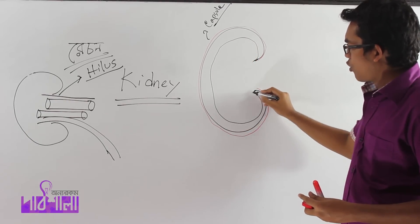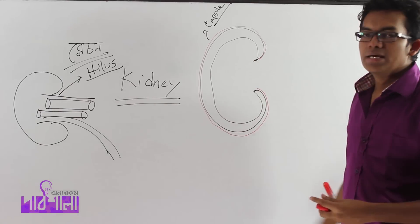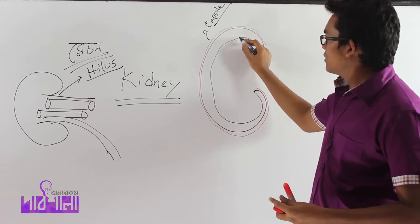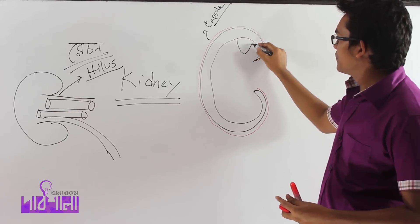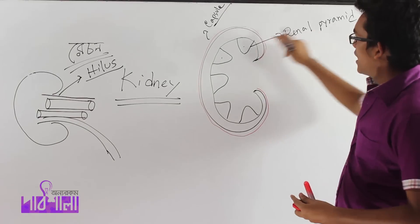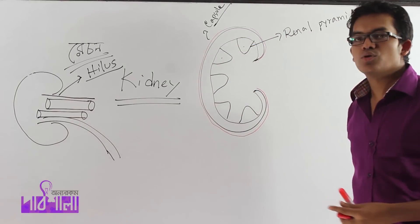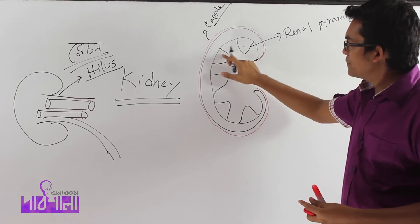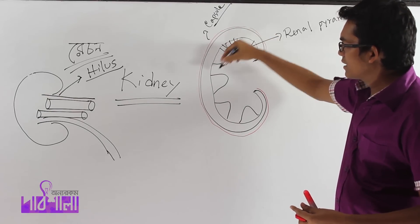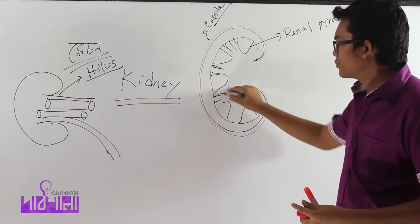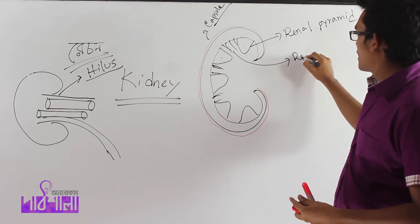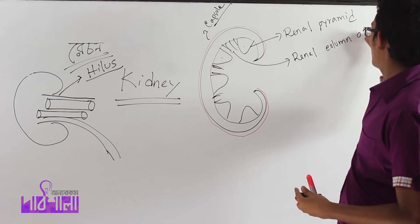This is the renal cortex. This represents the renal medulla. As you can see the renal pyramid — the structure that is the renal pyramid. The renal cortex is formed around the renal pyramid. This is the column of Bertini, which separates the renal pyramids within the kidney structure.